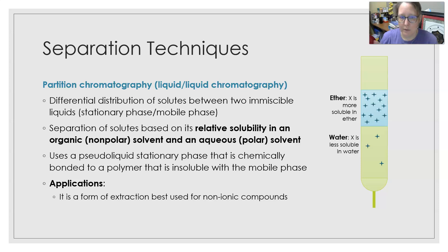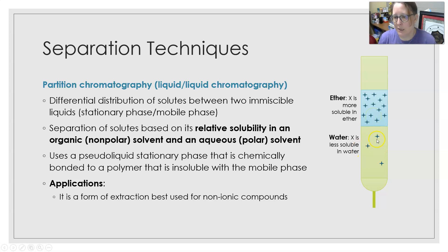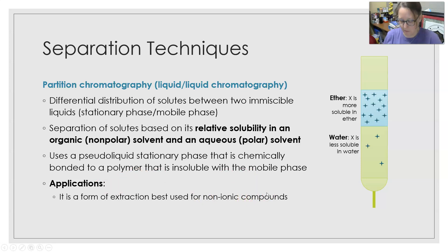In a column example of partition chromatography with ether and water, compound X is more soluble in ether, so it concentrates into the ether phase and is barely present in the water. It uses a pseudo-liquid stationary phase chemically bonded to an insoluble polymer, and it is a form of extraction best used for non-ionic compounds.